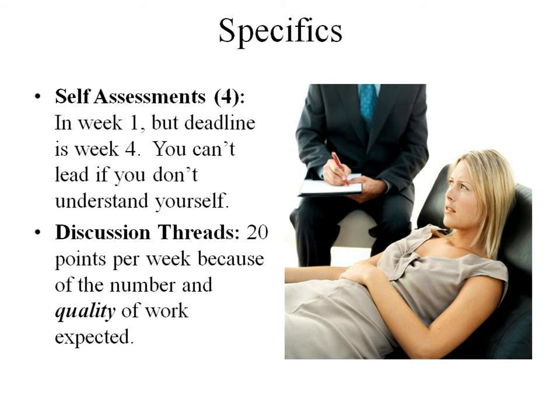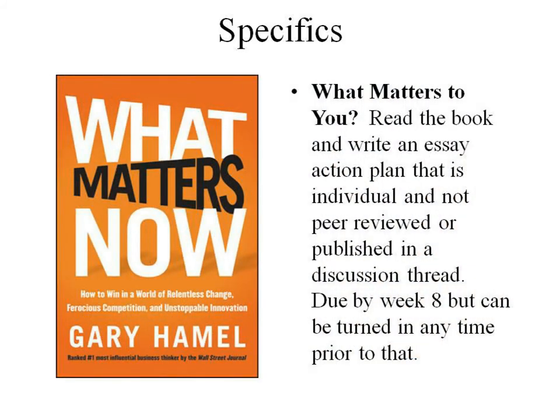The discussion threads are 20 points per week because of the number and quality of the work expected, as opposed to the 100 points per week you're used to seeing from me. After reading What Matters Now — an easy read by Gary Hamill — each of you will write a four to seven page self-analysis following APA format, double-spaced Times New Roman. No reference section is necessary. Discuss how you're going to apply the concepts discussed in this book in your organizational, academic, personal, and professional lives. It's due by the end of week eight, but if you read the book in the first week and write the paper, turn it in — you can turn it in whenever you want. This is an individual plan of action moving forward.